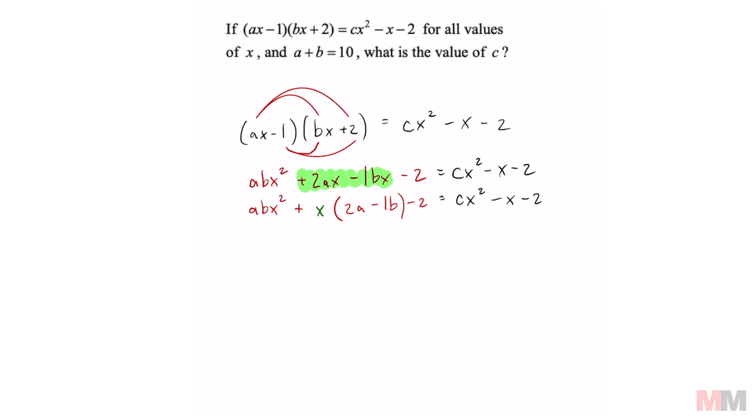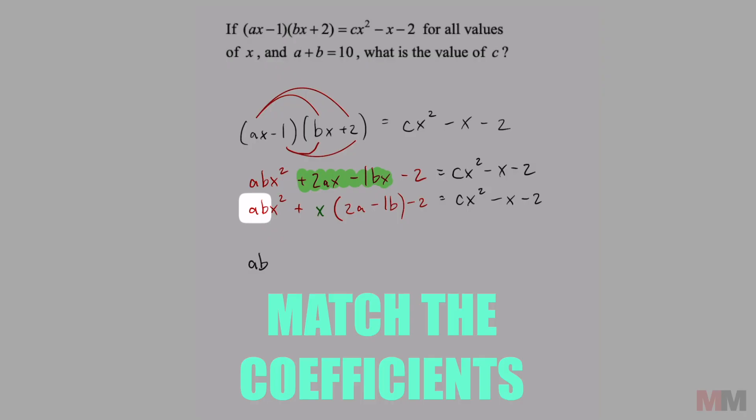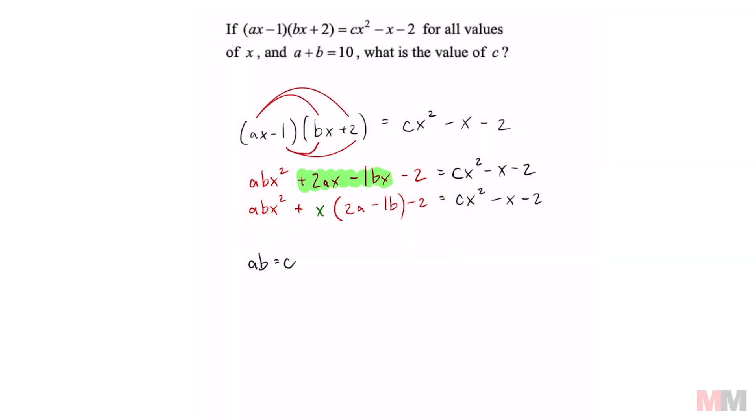So now you want to observe what you got. This right here matches up this trinomial. That means that ab is the coefficient that matches up c because those are what's in front of the x squared. So we can write ab equals c.